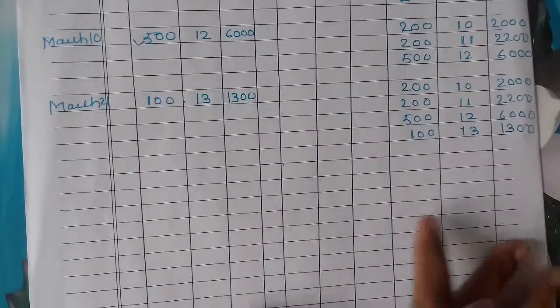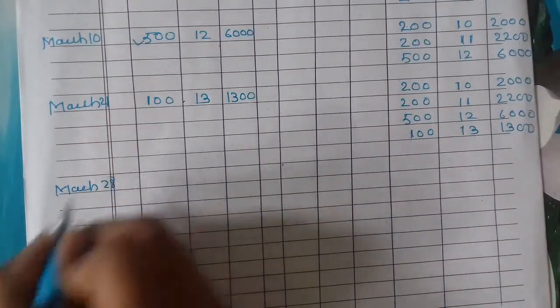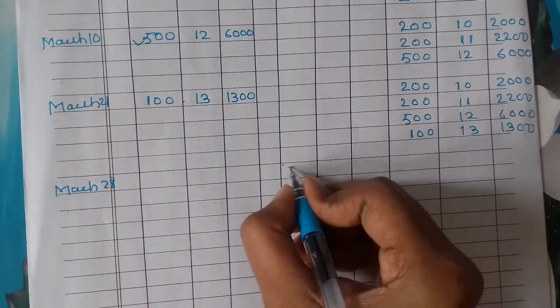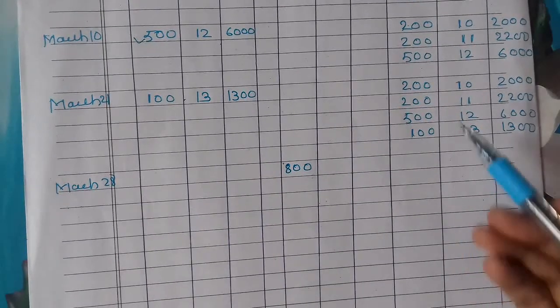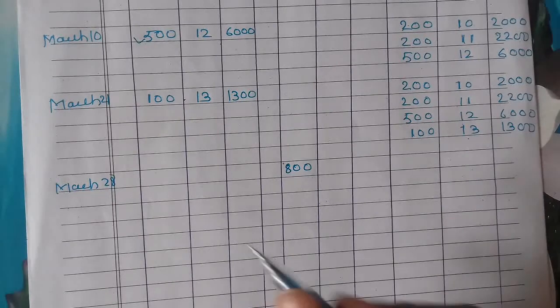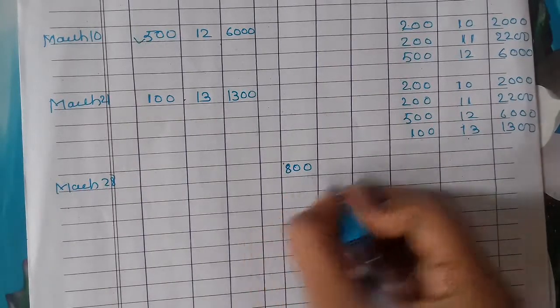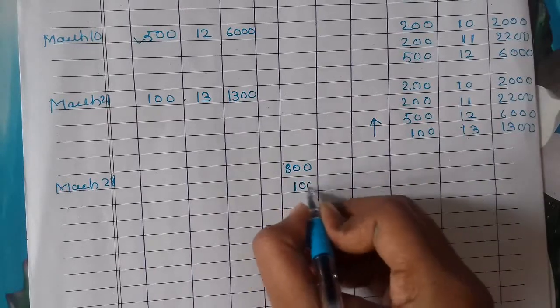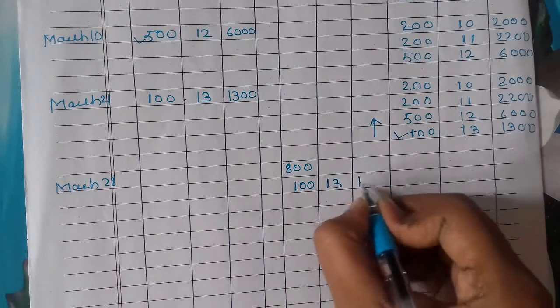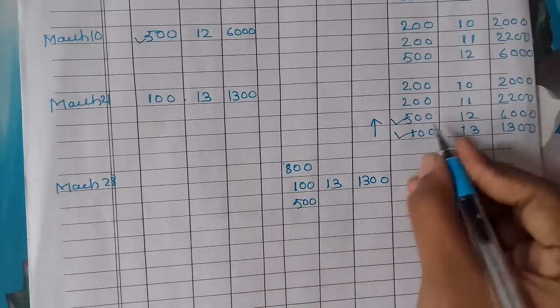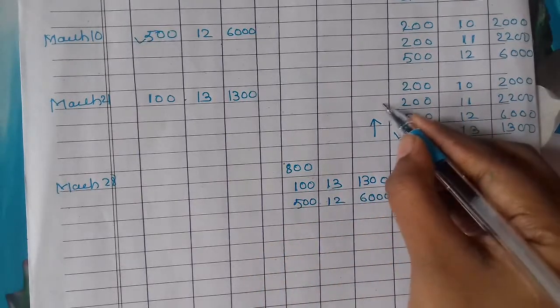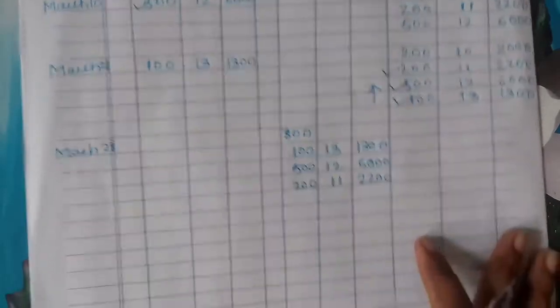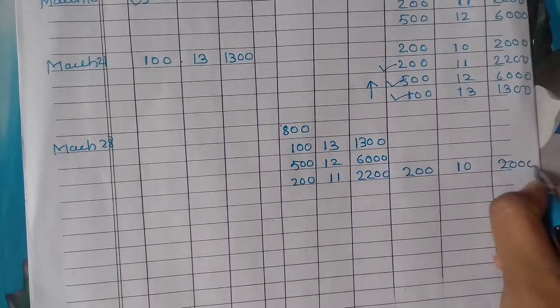Look at the next one, March 28 issues 800 units. Following LIFO, we take 100 units at rate 13 for 1300, then 500 units at rate 12 for 6000, and 200 more at rate 11 for 2200. Balancing figure: 200 units remain at rate 10, amount 2000.